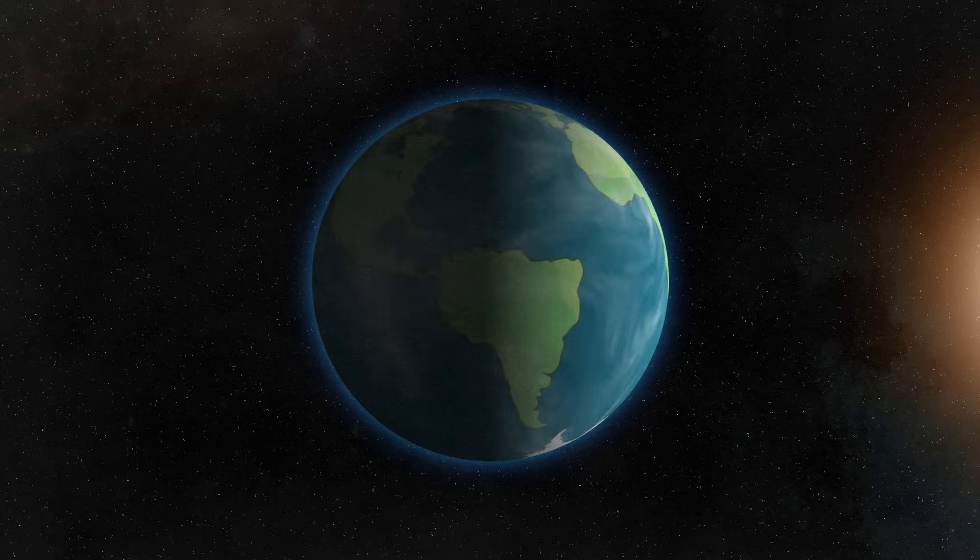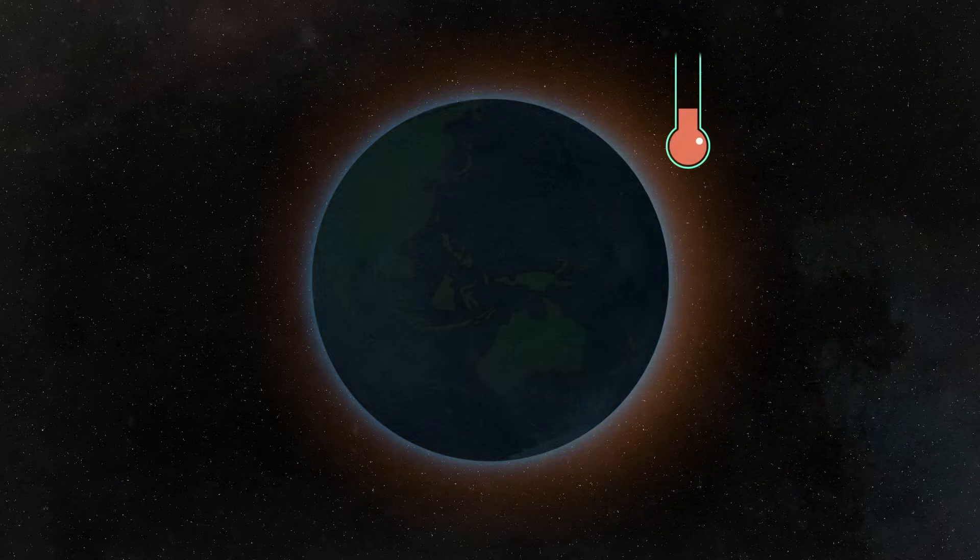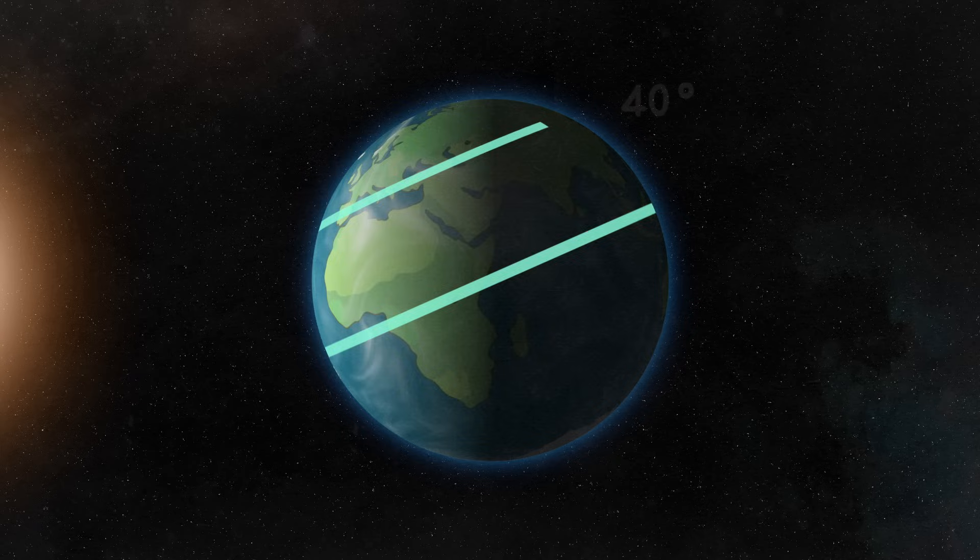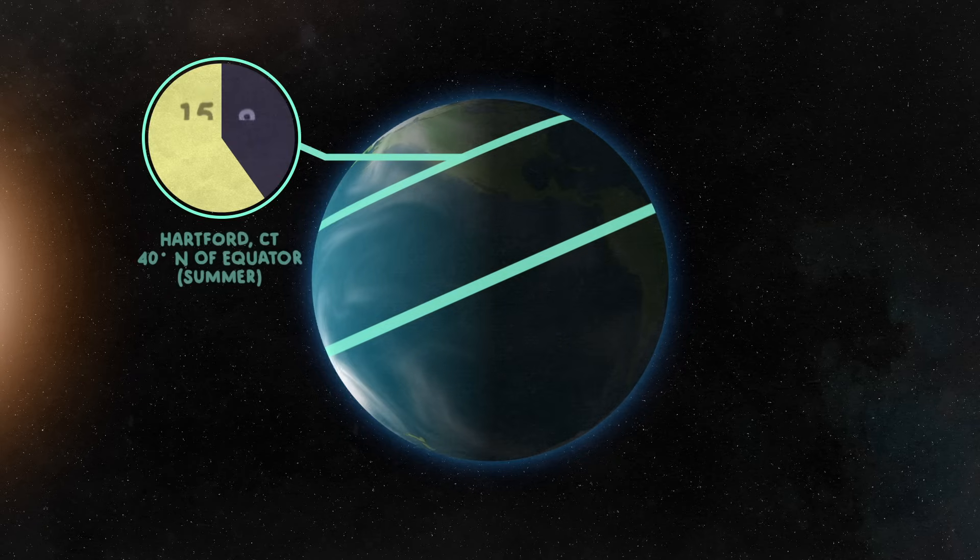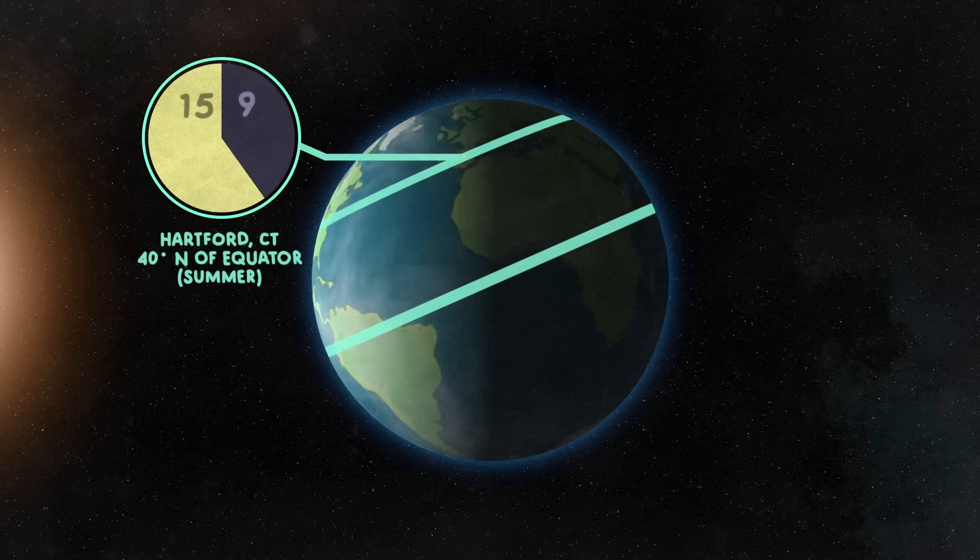So, when the sun is shining on the Earth, it warms up. After the sun sets, it has time to cool down. So in the summer, any location that's about 40 degrees north of the equator, like Hartford, Connecticut, will get 15 hours of daylight each day and 9 hours of darkness. It warms up for longer than it cools. This happens day after day. So there's an overall warming effect. Remember this fact for later.